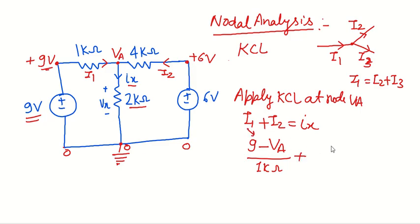Next thing is I2. Again, the similar thing will be here. It will be 6 minus VA divided by 4, and it should equal the potential difference across this 2 kilo ohm, which is VA minus 0. It is VA minus 0 divided by this 2 kilo ohm.